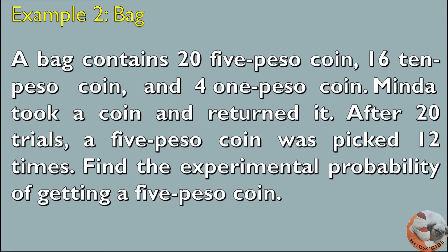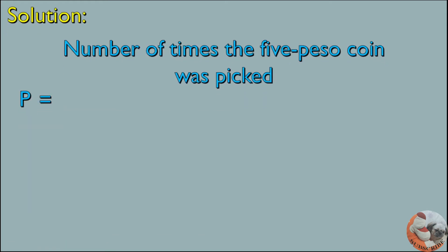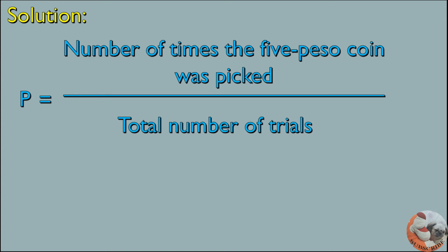Example 2: Bag. A bag contains 25 peso coins, 16 ten-peso coins, and 4 one-peso coins. Minda took a coin and returned it. After 20 trials, a 5-peso coin was picked 12 times. Find the experimental probability of getting a 5-peso coin. From the formula: P is equal to the number of times the 5-peso coin was picked divided by the total number of trials. Probability is equal to 12 divided by 20.